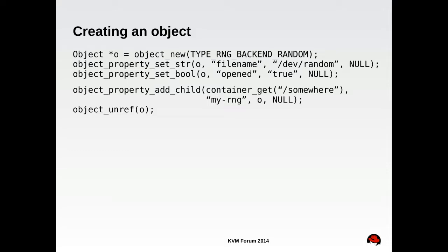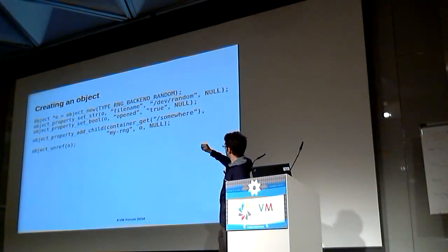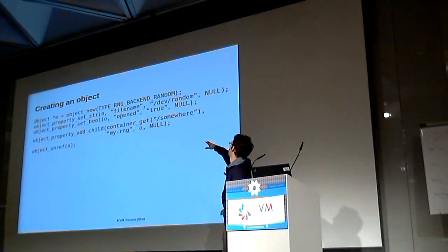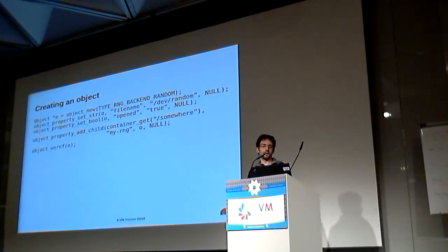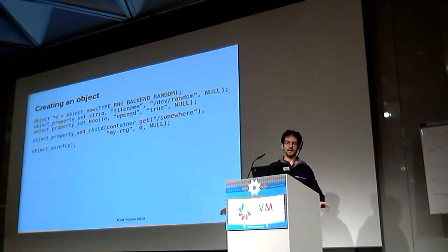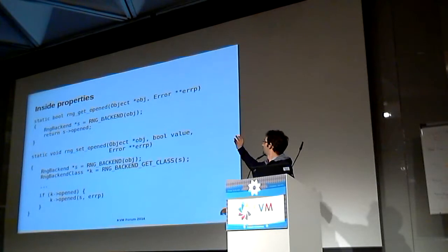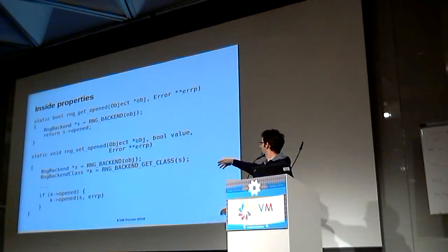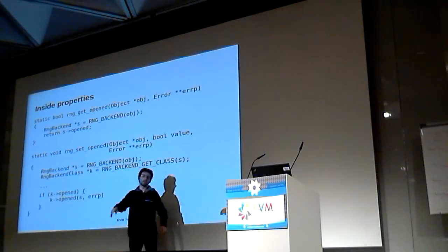When you create an object using QOM, you set the properties using those wrappers, then you add the object as a child to something somewhere. At that point you can drop the original reference to the object, because the object stays alive thanks to the child property. Inside the properties, writing properties is trivial. You use the bool wrapper, so you just return or accept a bool in the RNG set opened handler. You can have side effects — for example, if you get a true value, you call an arbitrary method within the object.